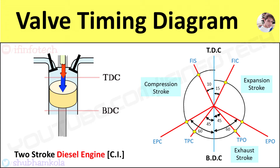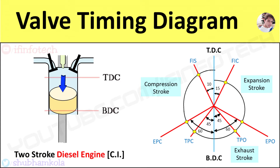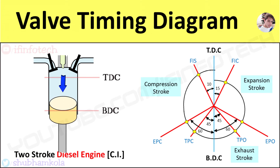The fuel gets ignited due to the high temperature of the compressed air and the expansion stroke starts when the piston moves from TDC to BDC. During the expansion stroke, the high pressure and high temperature burned gases force the piston to perform the power stroke. This stroke is also known as the expansion or working stroke.